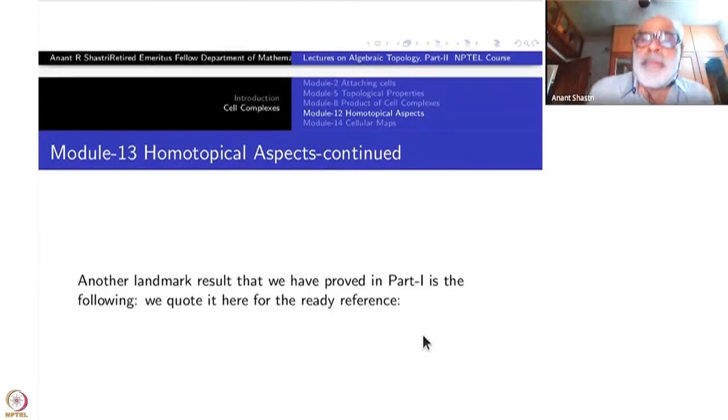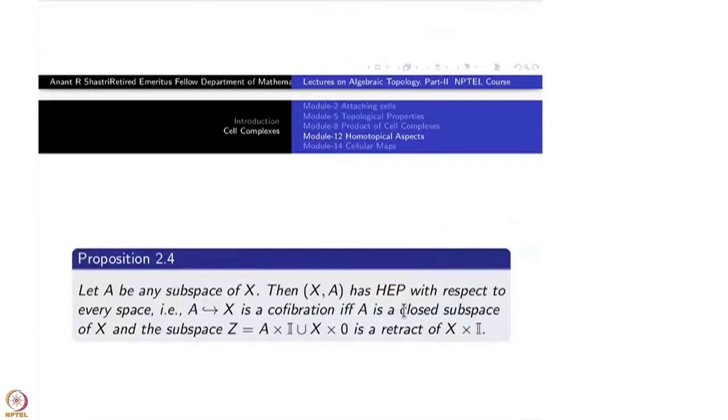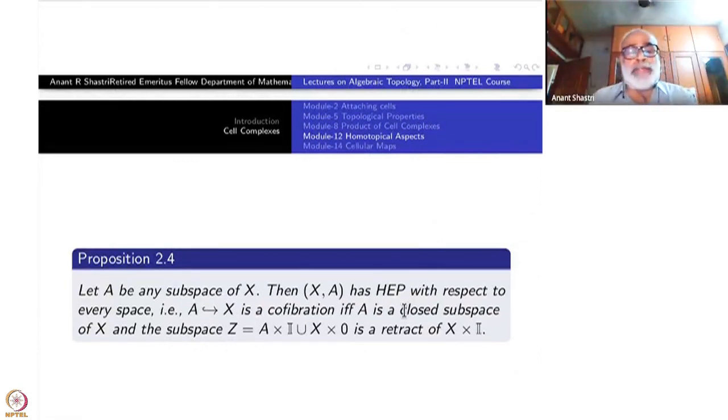Let me begin with a result from part 1 which will be useful again. Take any subspace X, then the pair (X,A) has homotopy extension property with respect to every space - that is, A to X is a co-fibration if and only if A is a closed subspace of X and the subspace Z, which is A×I ∪ X×0, is a retract of X×I.